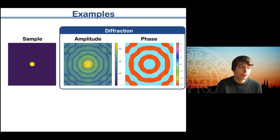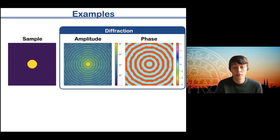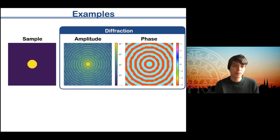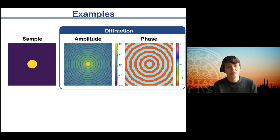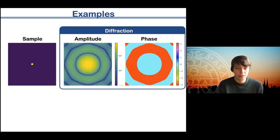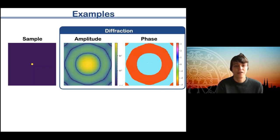If you make the circle twice as large, the Fourier transform also scales, but inversely — this is very characteristic of the Fourier transform: making something bigger in real space makes its Fourier transform scale down by the same amount. Conversely, making it smaller makes the Fourier transform wider. This inverse scaling relationship is fundamental.